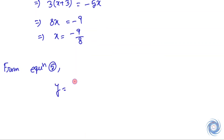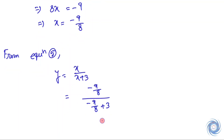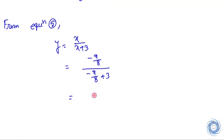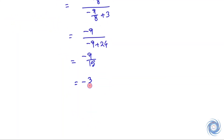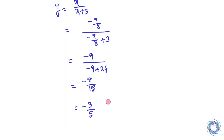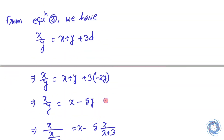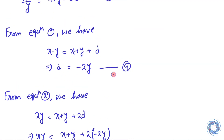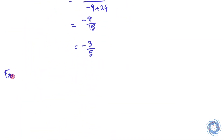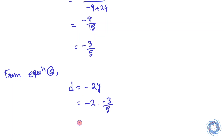From equation 5, we calculate the value of y: y equals x over x plus 3. Substituting x equals minus 9 over 8 and simplifying, we get y equals minus 3 over 5. Then using equation 4, we calculate d equals 6 over 5.